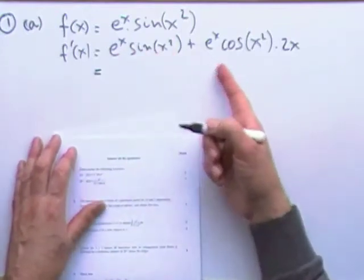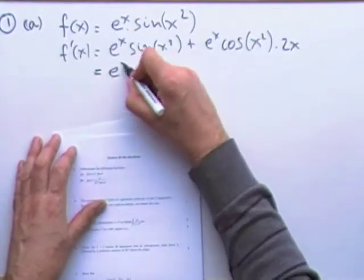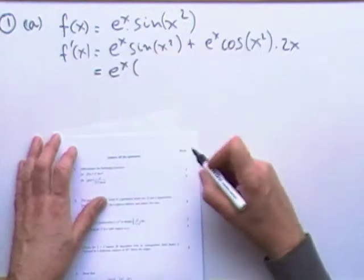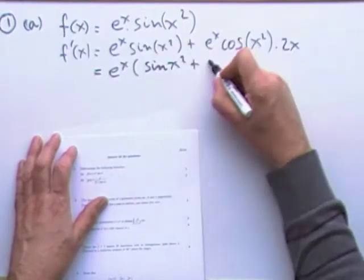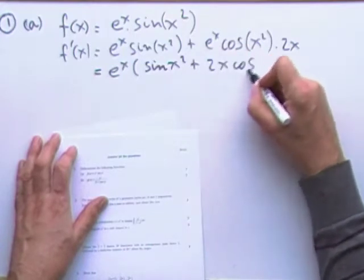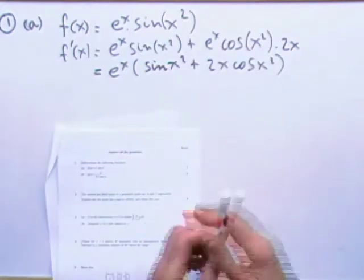It's just a case of how could we tidy that up? You can take out e to the x as a factor, and that would leave you with sine x squared plus 2x cos x squared for the first one.